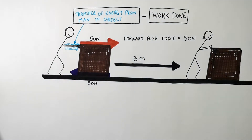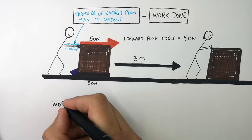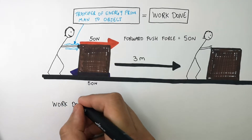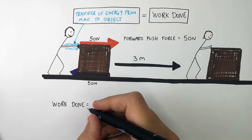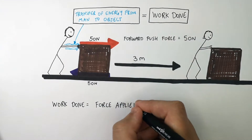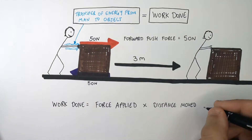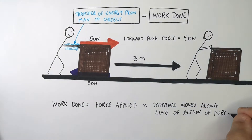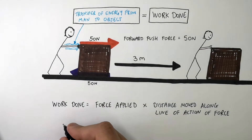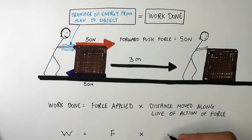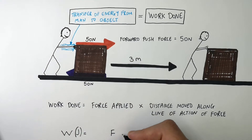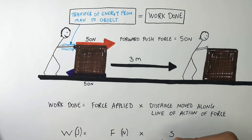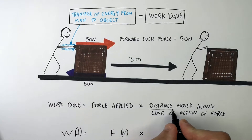We can calculate the energy transferred from the person to the box to move it 3 meters using the equation: work done equals force applied times the distance moved along the line of action of the force, which is W equals F times s. Because work done is energy transferred, the unit for work done is joules. The force applied is in newtons, and distance is in meters.